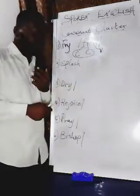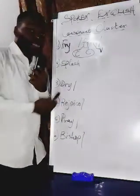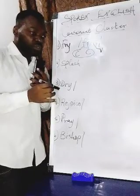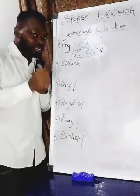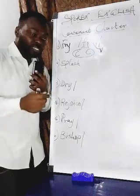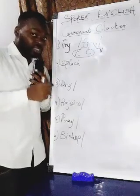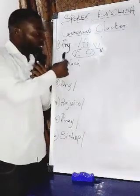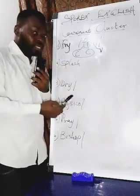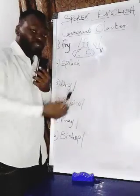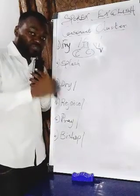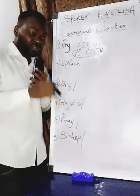Now let's come to the board. We have the word 'fry' as our first example. One important thing about consonant cluster is that you identify the cluster from the sounds, not from the consonant letters. There is a wide difference between a consonant letter and a consonant sound. We are not going to identify the cluster from the letters — we are going to identify it from the sounds.